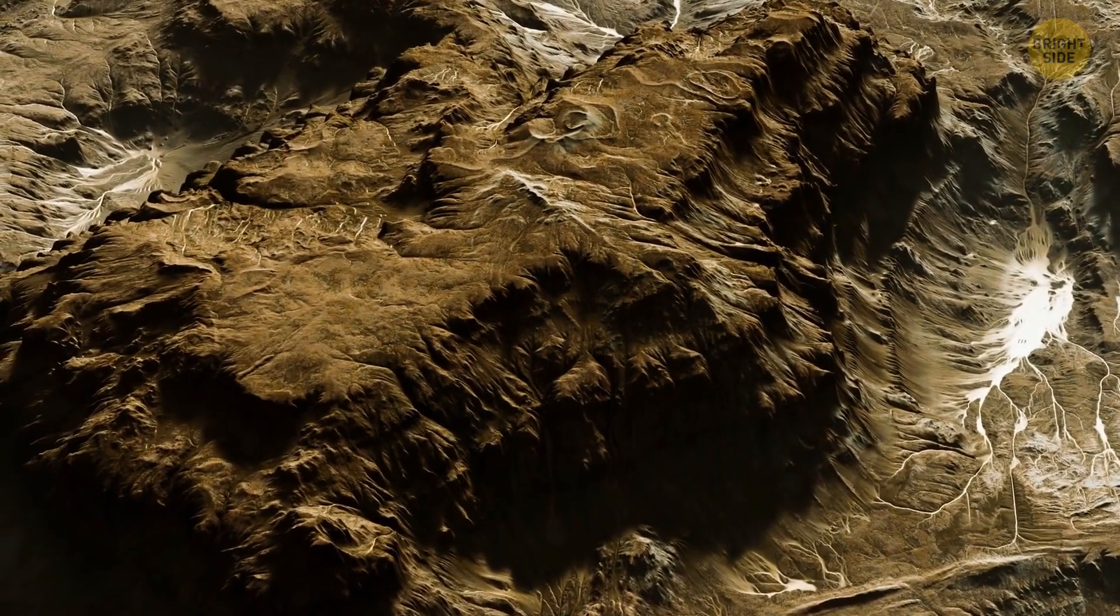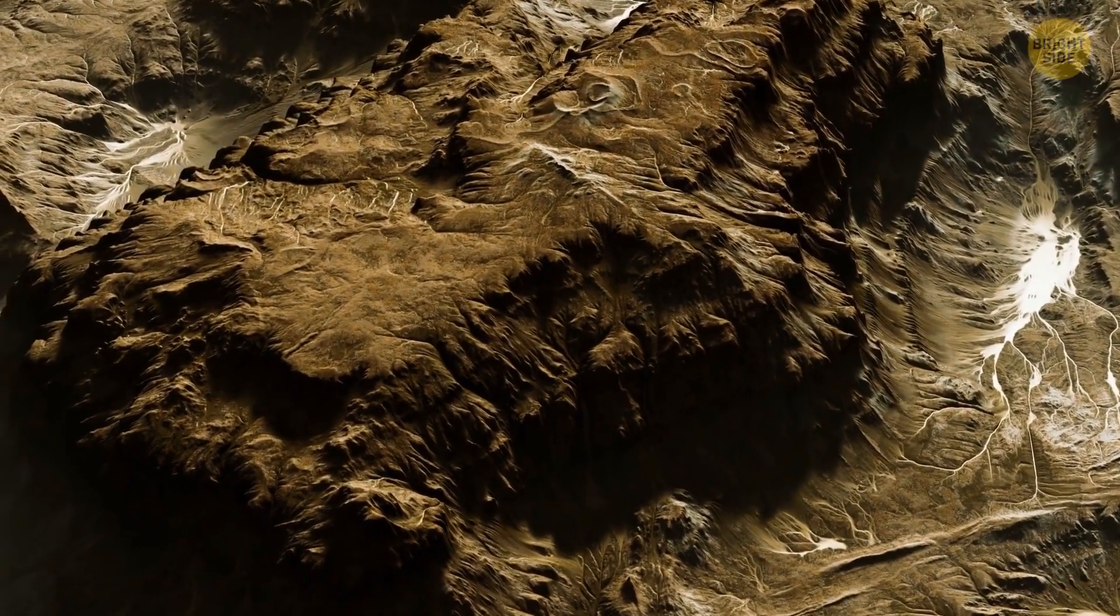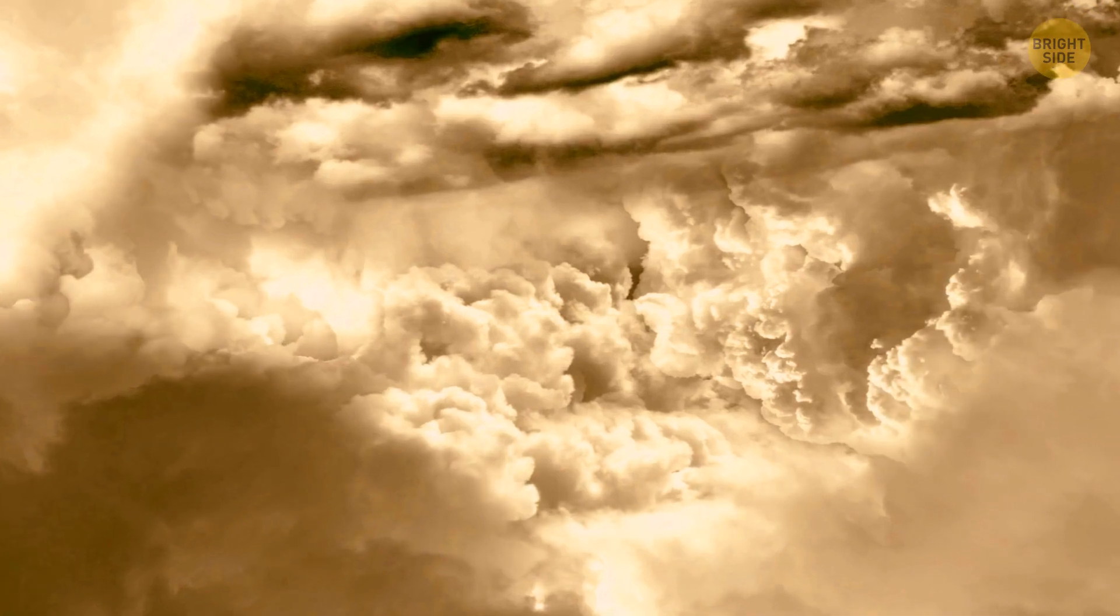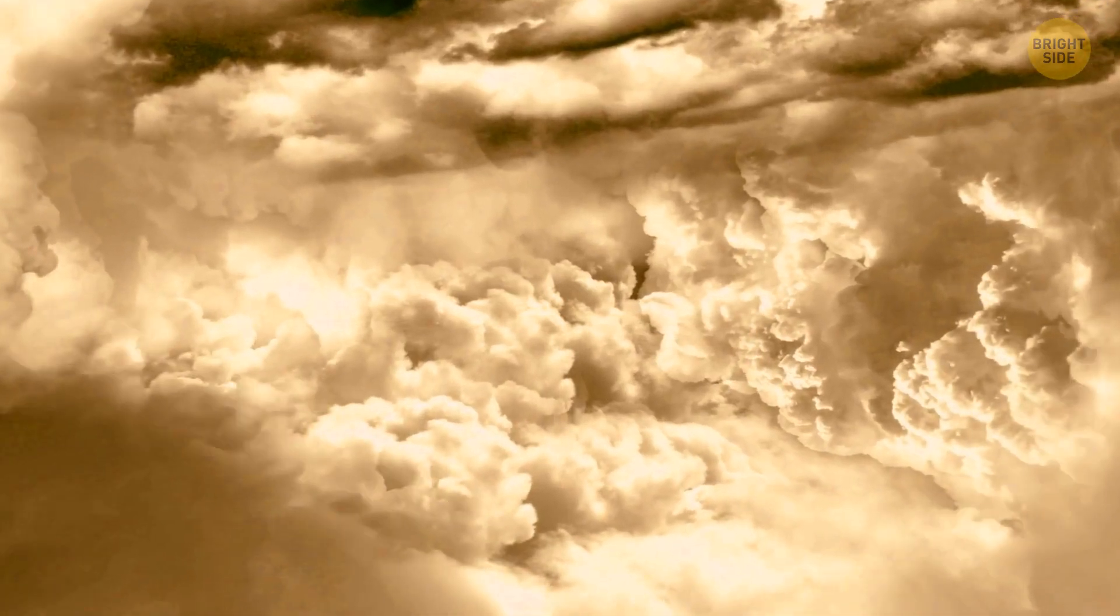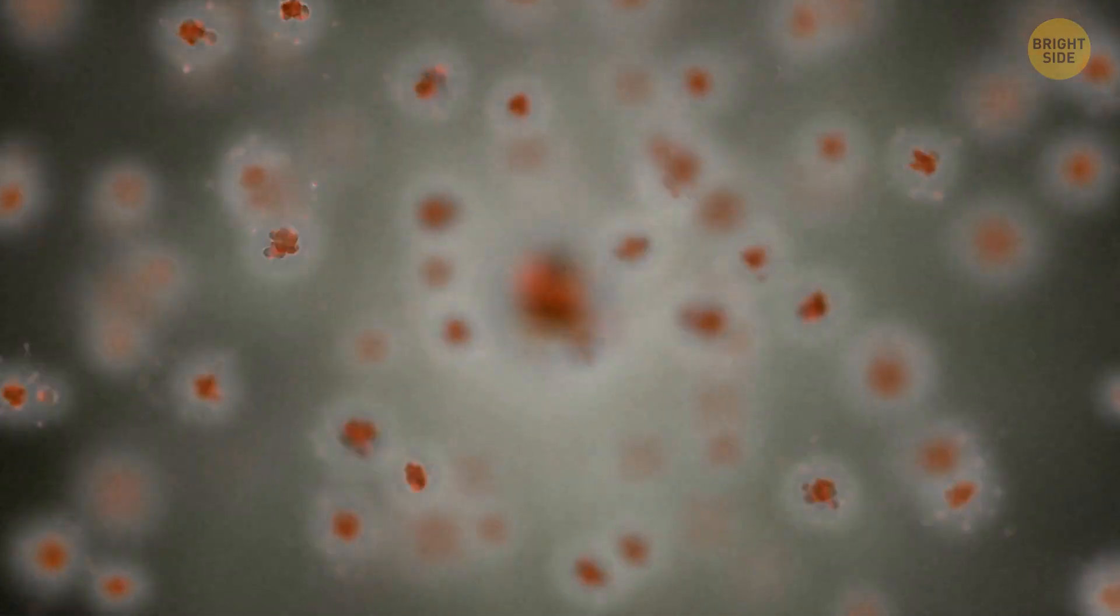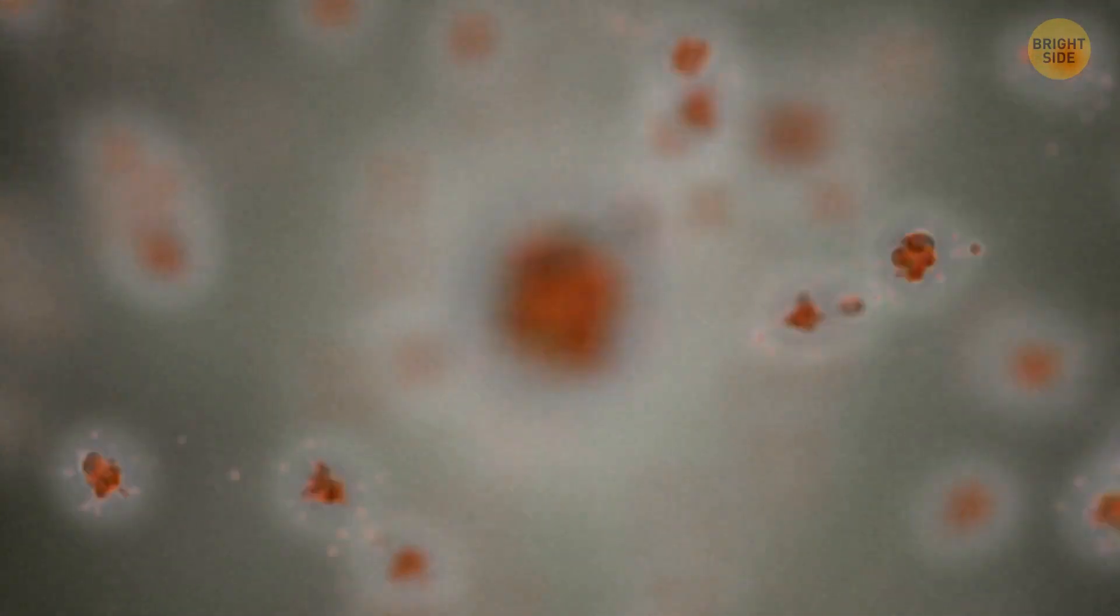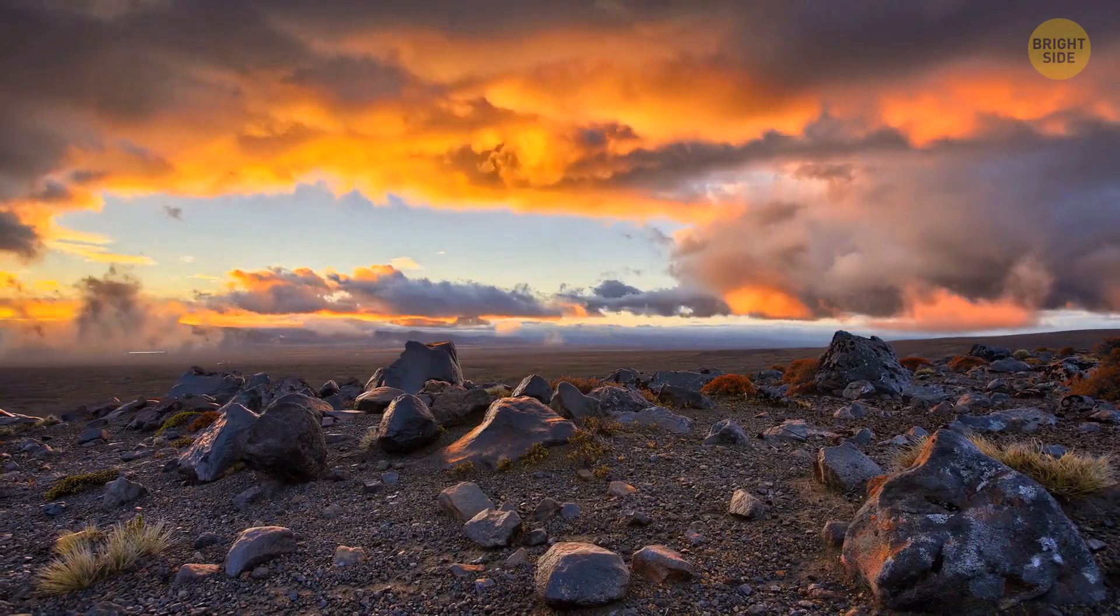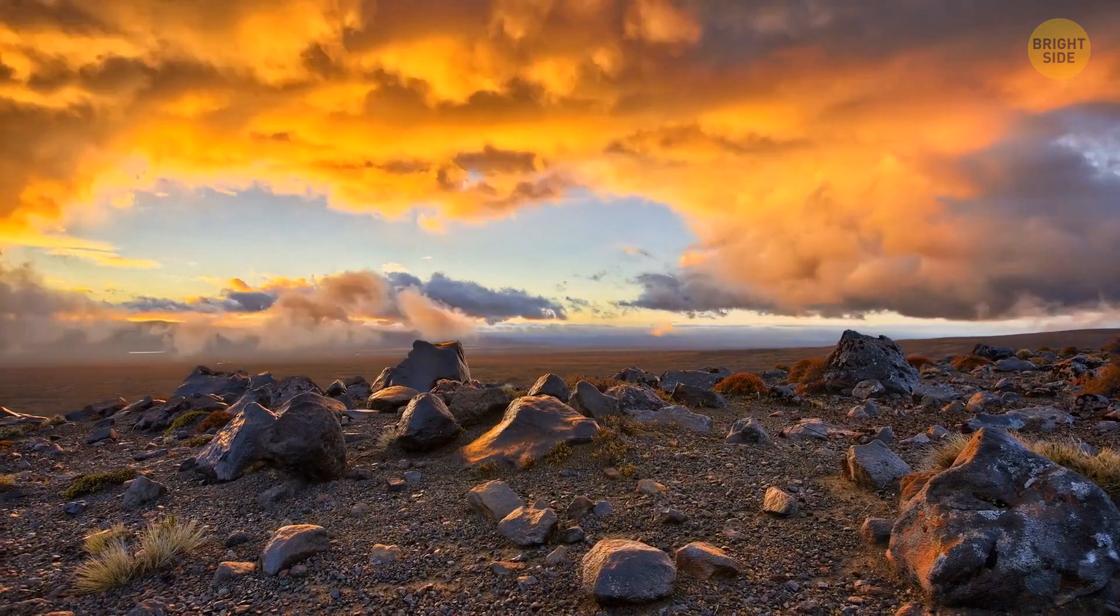And finally, believe it or not, we can't completely rule out the possibility of life on Venus even now. Up high in the thick yellow clouds where the temperature, air pressure, and chemistry are friendlier, there might be a chance. That's a range where Earthly life, like tough extremophile microbes, could potentially survive. The atmospheric pressure up there is similar to what we experience on Earth's surface.